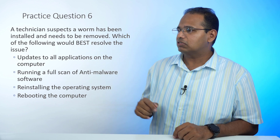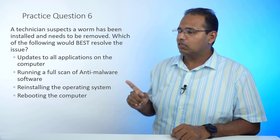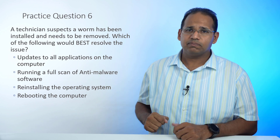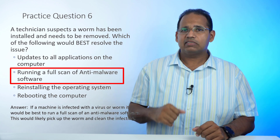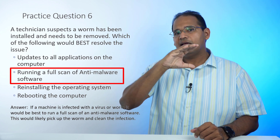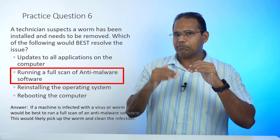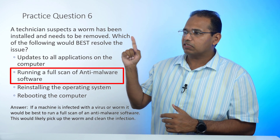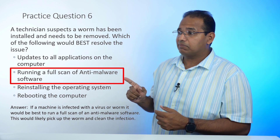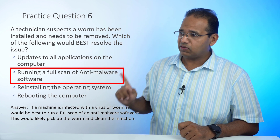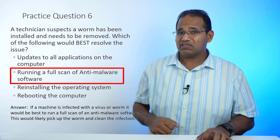Practice question six: A technician suspects a worm has been installed and needs to be removed. Which of the following would best resolve the issue? The best answer is to run a full scan of anti-malware software. In the A-plus exam objectives, there is a list of anti-malware removal steps in objective 2.0 — make sure you know those steps. Updating applications won't help as the machine is already infected. Reinstalling the OS will fix it but erases all data. Rebooting may have no effect on an already-infected machine.